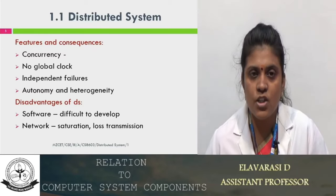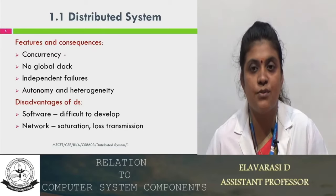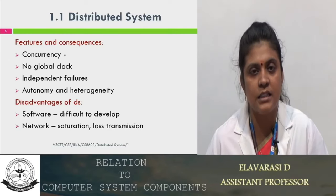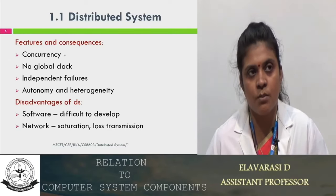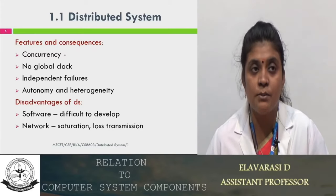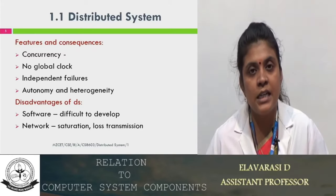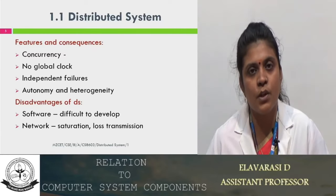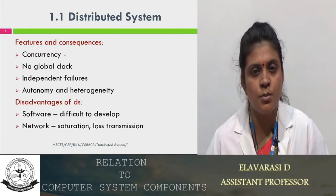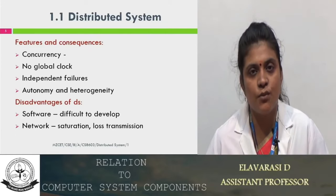The disadvantages of a distributed system: the software is difficult to develop; there is no separate software for the distributed system, and only through an abstraction layer — the middleware layer — is it able to handle this. The next problem is the network, which leads to saturation. At one point, a large amount of data will be uploading and downloading, leading to large latency and reduced transmission performance. This causes network saturation and loss of transmission.